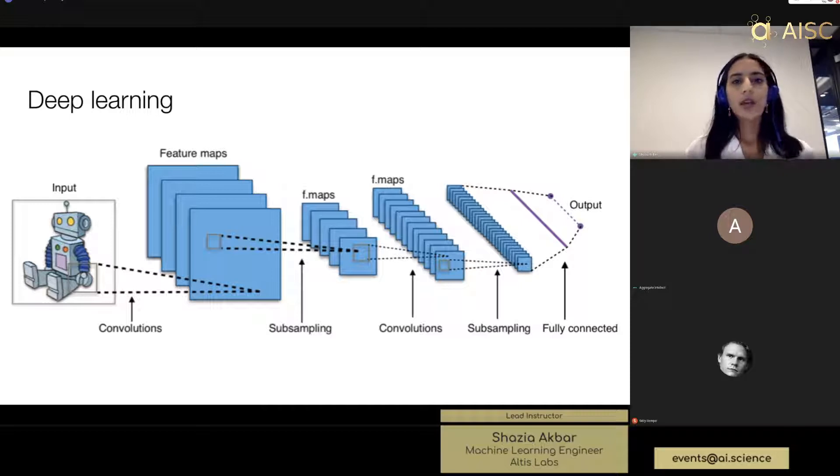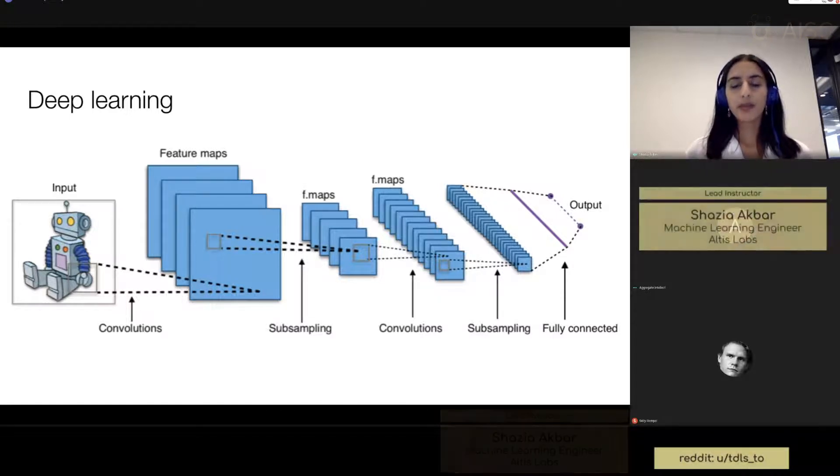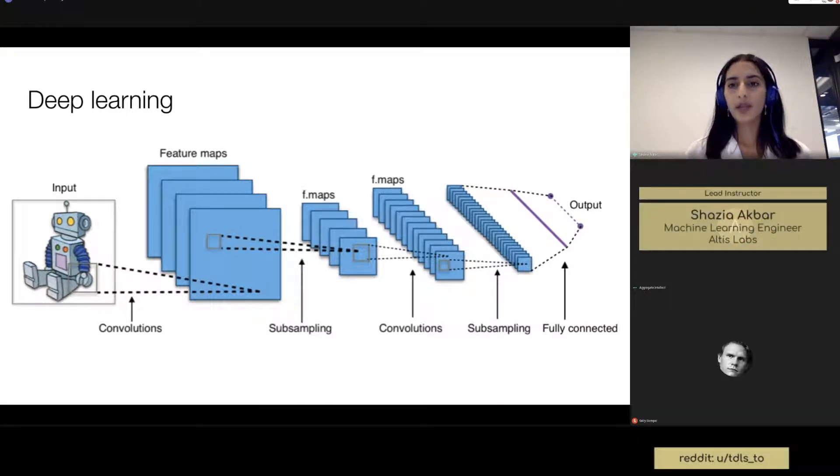We call this Deep Learning because the number of layers tend to be vast and they have been getting bigger as time has developed, and therefore can capture deep abstractions of the input data that you feed into the architecture.